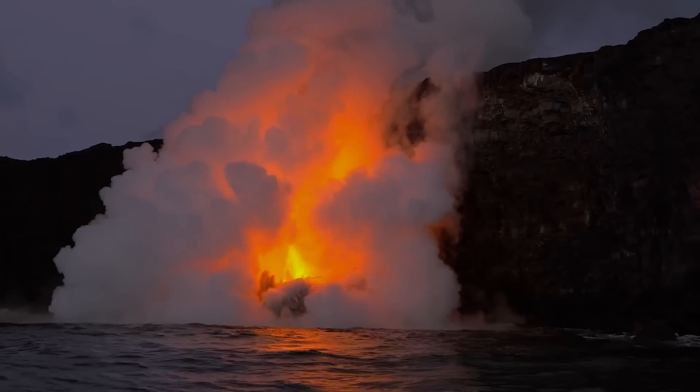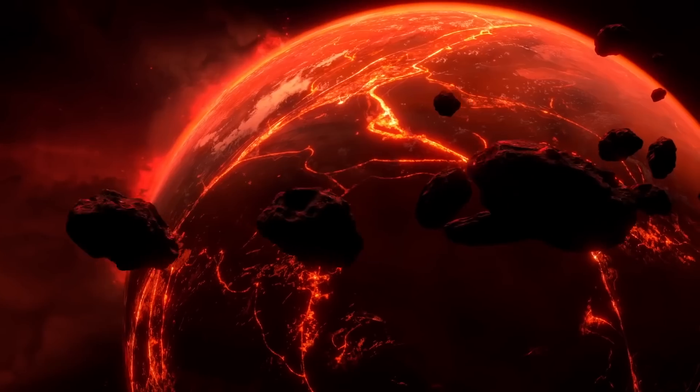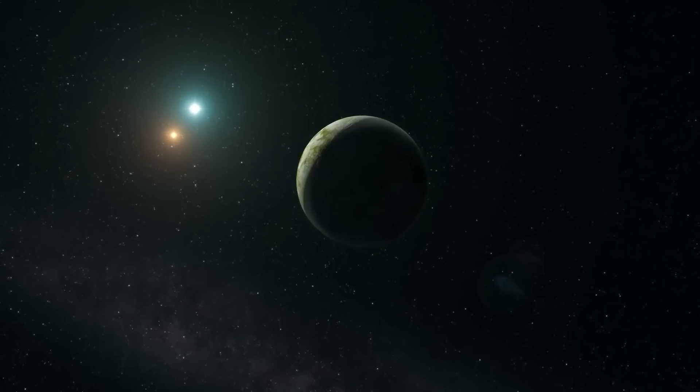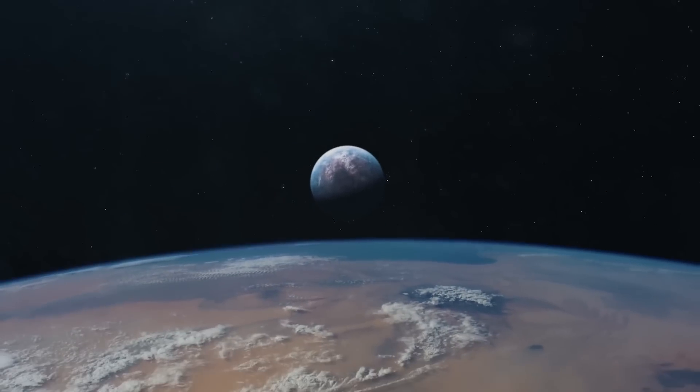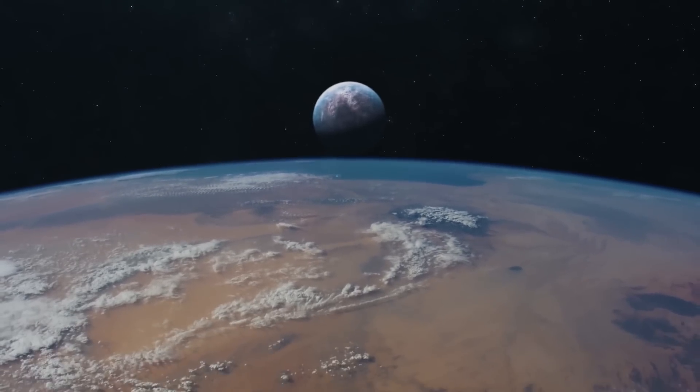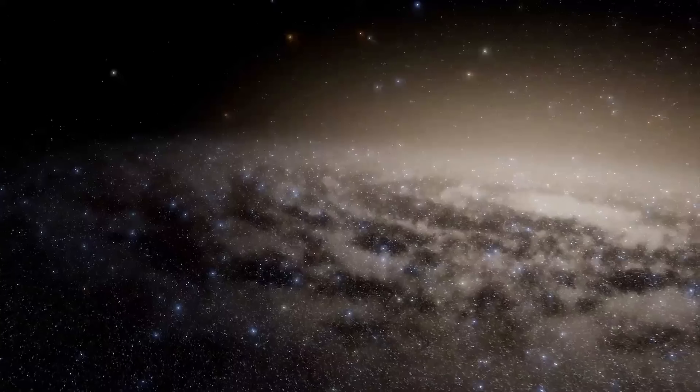So close that the oceans boil away, rocks begin to melt, and the clouds rain lava. While nothing like this exists in our own solar system, planets like this—rocky, roughly Earth-sized, extremely hot and close to their stars—are not uncommon in the Milky Way galaxy.